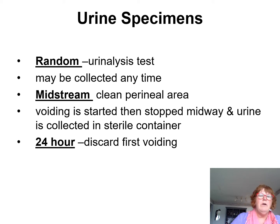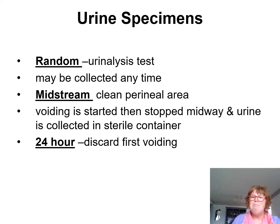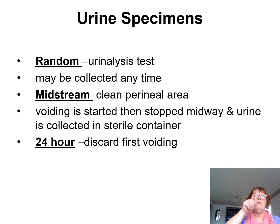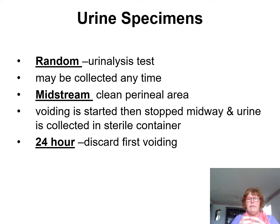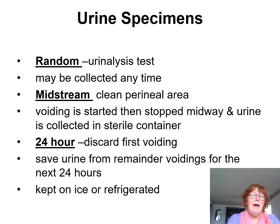For a 24-hour urine specimen, you discard the first voiding — for example, if the first voiding was at 6 in the morning, discard it, then collect all urine for the next 24 hours. The last voiding would be the next morning. Save the urine for all remaining voidings over the 24 hours. Usually it is kept on ice or in the refrigerator.